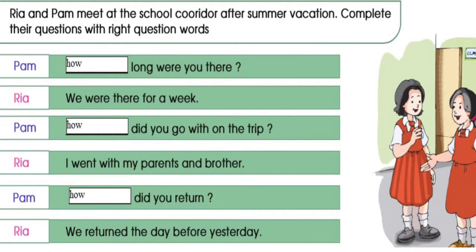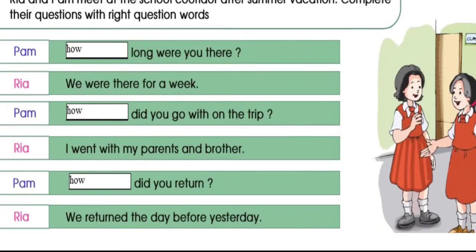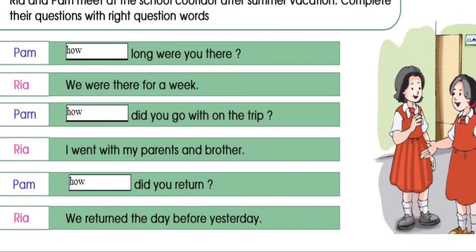Pam is asking: How long were you there? Ria said we were there for a week. Next — here don't use 'how,' write 'where.' W-H-E-R-E. Where did you go on the trip? I went with my parents and brother. Pam is saying: How did you return from there?